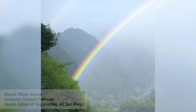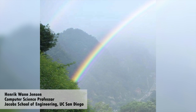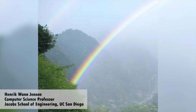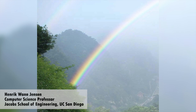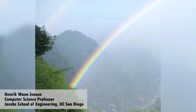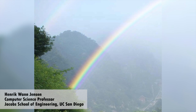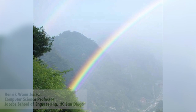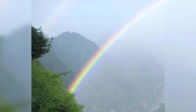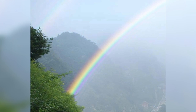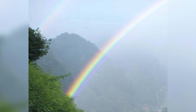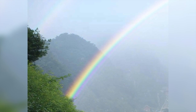This picture shows a rainbow simulation using our method. As can be seen, it captures the bright primary rainbow, as well as a little bit of a supernumerary bow, and you can also see a sort of faint double rainbow in the picture.